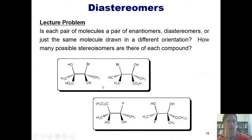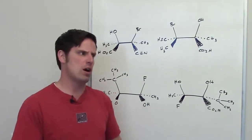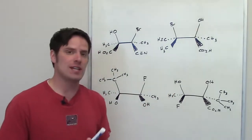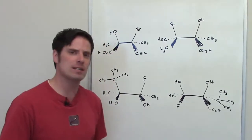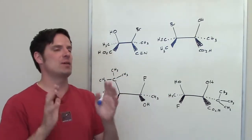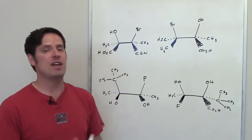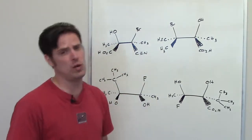In this question I ask you to determine if each of these individual pairs are enantiomers, diastereomers, or just the same molecule drawn in a slightly convoluted way. The way to do this, once again, is the same approach we did in the previous problem: identify the configuration for each stereocenter in the molecule to the left and compare it to the analogous stereocenter in the molecule on the right. If they're exact opposites — R to S at every single stereocenter — then they are enantiomers. If they are exactly the same, R to R and S to S, then they're the same molecule. And if they're somewhere in between, then they're diastereomers.